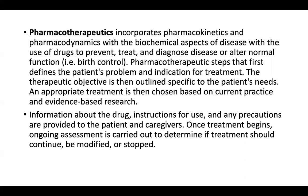Altering normal functions means, for example, taking birth control. The pharmacotherapeutic steps are: first, define the patient's problem and indication of treatment. The therapeutic objective should be outlined specific to the patient's needs. Based on the patient's problem, we choose to give the appropriate treatment. Information about the drug, instructions for use, and any precautions are provided to the patient and caregivers. Once treatment begins, ongoing assessment is carried out to determine if treatment should be continued, modified, or stopped.